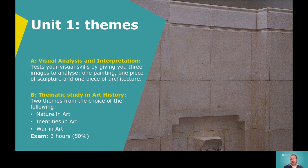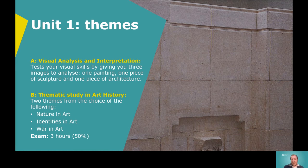Unit One is worth 50% of the overall A-Level and assessed via a three-hour essay-based exam. It's worth noting that History of Art has no coursework — it is purely assessed through exams at the end of the course. A big part of what I'll be teaching is how to write good, structured, analytical essays: how to approach them, structure them, plan and prepare them, and develop your written skills under timed conditions.